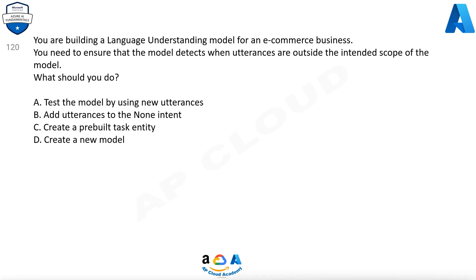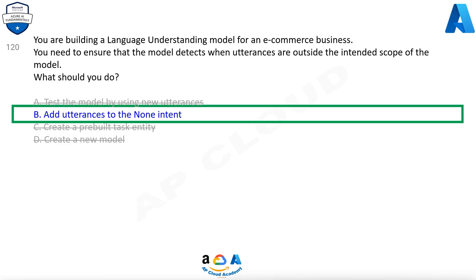Question 120. You are building a language understanding model for an e-commerce business. You need to ensure that the model detects when utterances are outside the intended scope of the model. What should you do? A. Test the model by using new utterances. B. Add utterances to the none intent. C. Create a pre-built task entity. D. Create a new model. Answer: B. The none intent is filled with utterances that are outside of your domain.